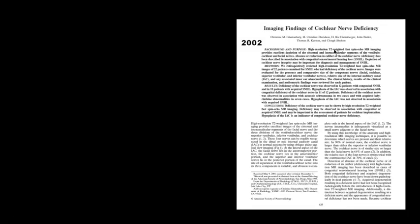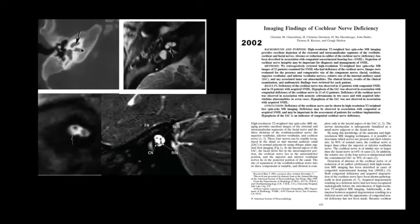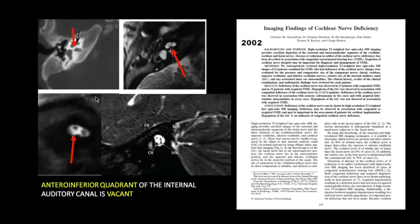Imaging findings in cochlear nerve deficiency were described in this article from Utah in 2002. This patient has a thick bony web occluding the cochlear nerve foramen, and the cochlear nerve is absent, manifest by a vacant antero-inferior quadrant of the internal auditory canal. In the normal case, we can see the normal cochlear nerve populating the antero-inferior quadrant of the canal.